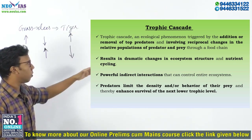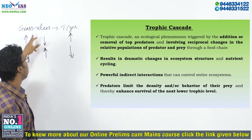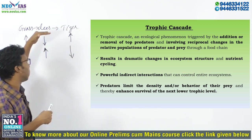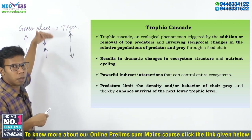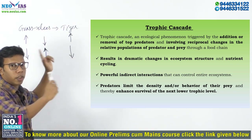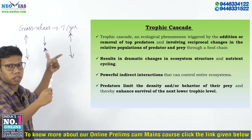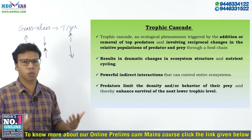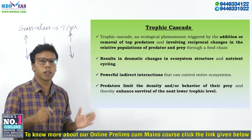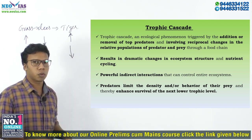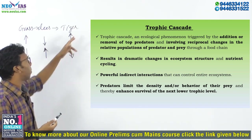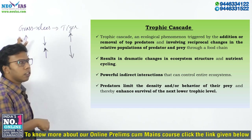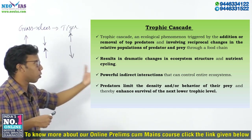Trophic Cascade will also result in changes in the nutrient cycle. Through the food chain, nutrients are cycling through the ecosystem. If the food chain is disrupted — if population changes are happening — that will affect the cycling of nutrients. Trophic Cascades are powerful indirect interactions that can control entire ecosystems, because the increase or decrease in population of the third Trophic level species is indirectly affecting the first Trophic level species.